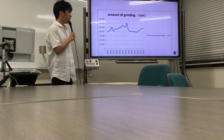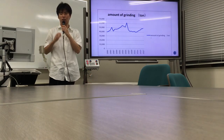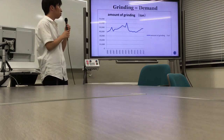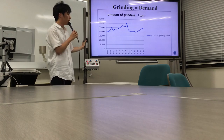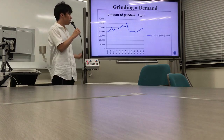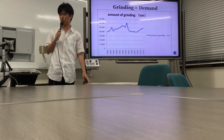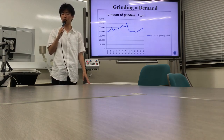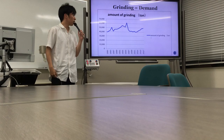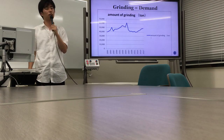This graph shows the amount of demand over time. The highest demand was around 2006-2007. In 2007 the demand went down, but then from around 2009 onwards the demand increased a little. Today, the demand is higher than it was in earlier years.